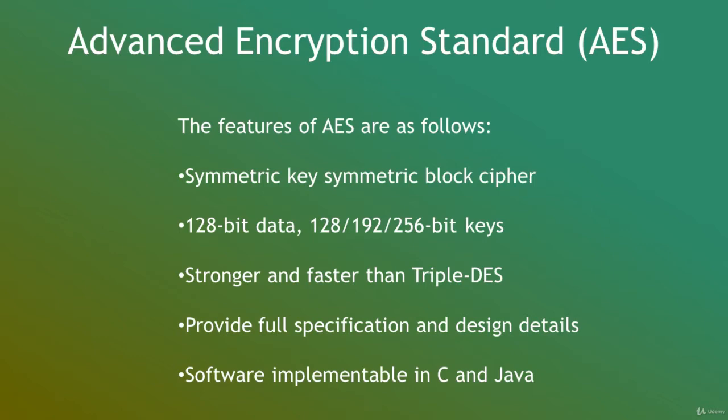The features of AES are as follows: it has a symmetric key, symmetric block cipher, 128-bit data, and 128, 192, or 256-bit keys. It is stronger and faster than Triple DES. It provides full specification and design details, and the software is implementable in C and Java.